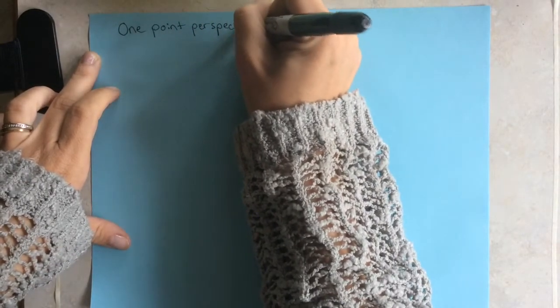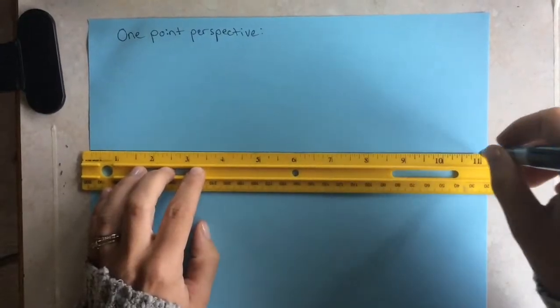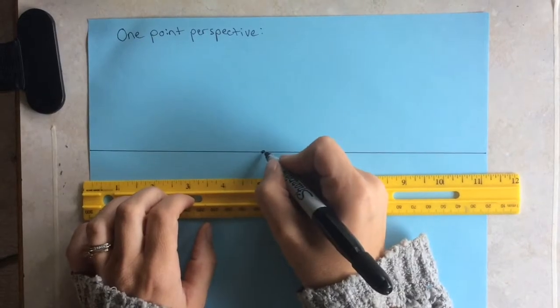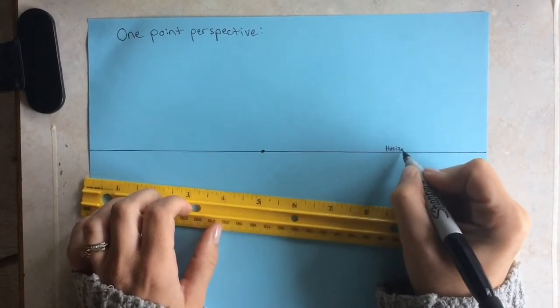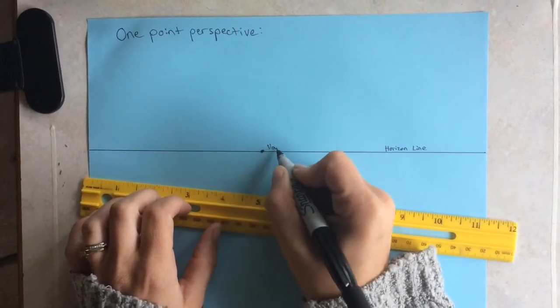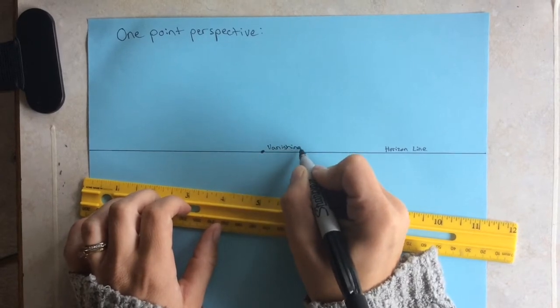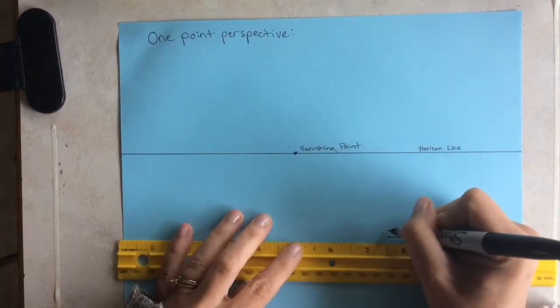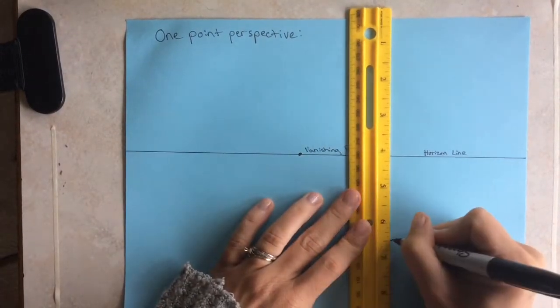In today's video, I'll be teaching you the basics of one point perspective. First, you want to have a horizon line and a vanishing point. Make sure you only have one vanishing point for one point perspective.